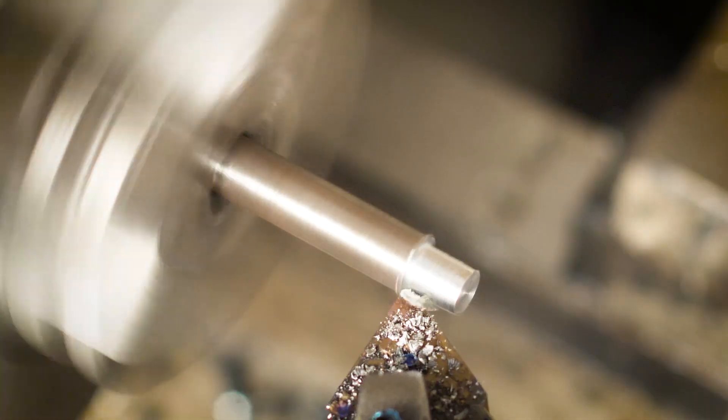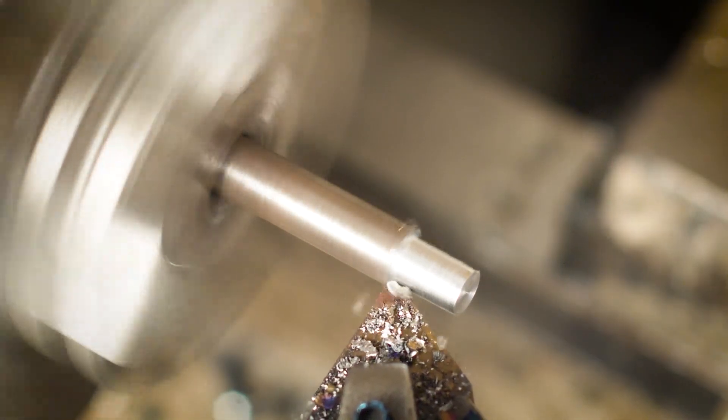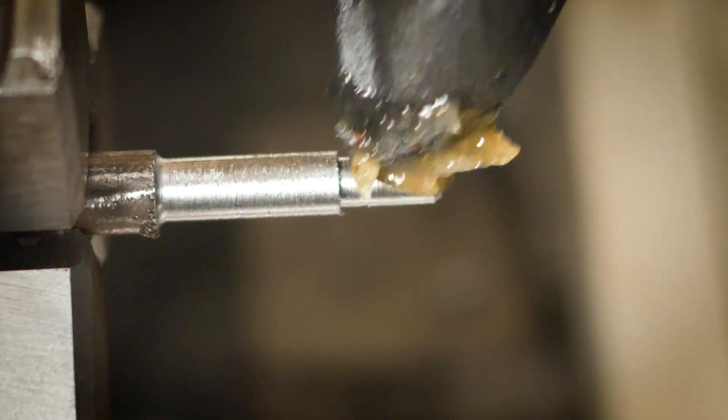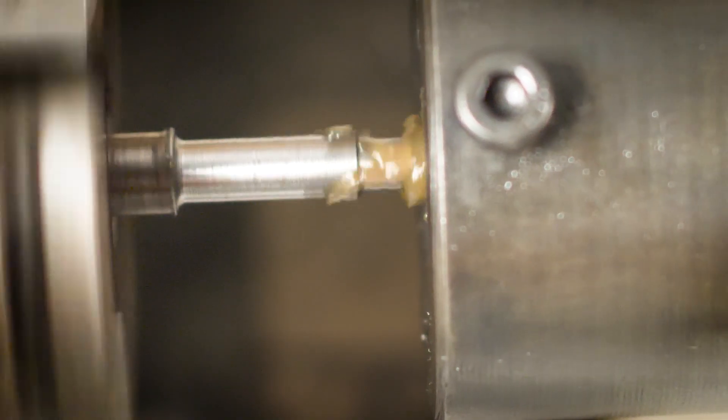And now for that pin. So I turned it to form a shoulder and that's going to seat in the counter bore that we previously made. I then used my tailstock die holder to thread the ends and after parting off, this piece was done.